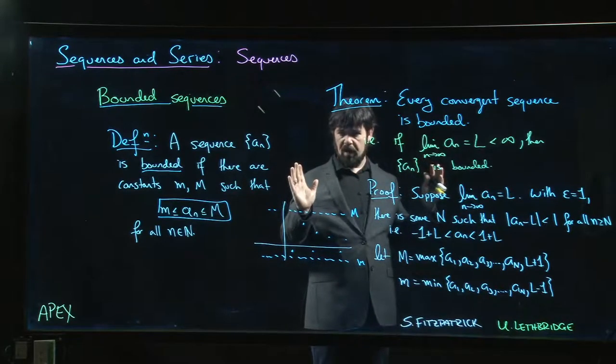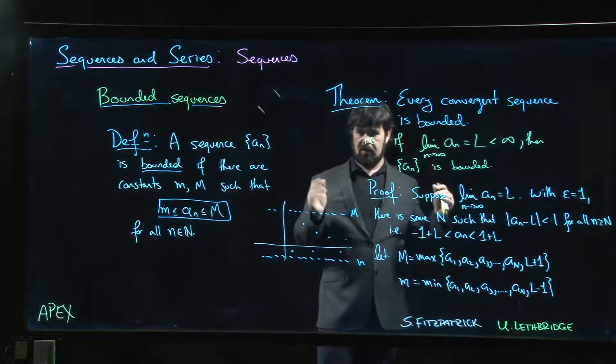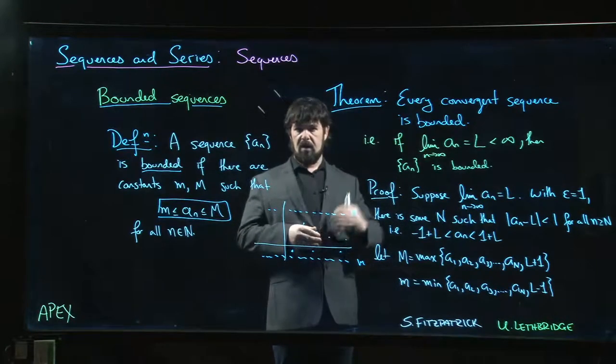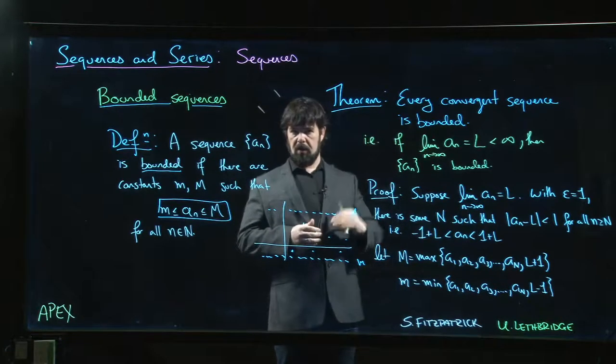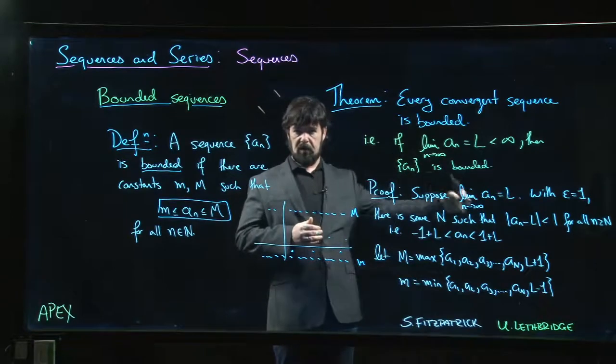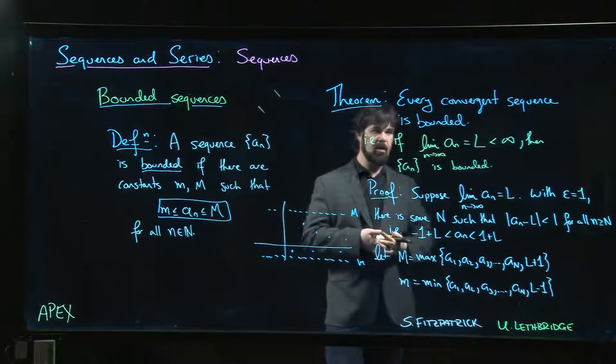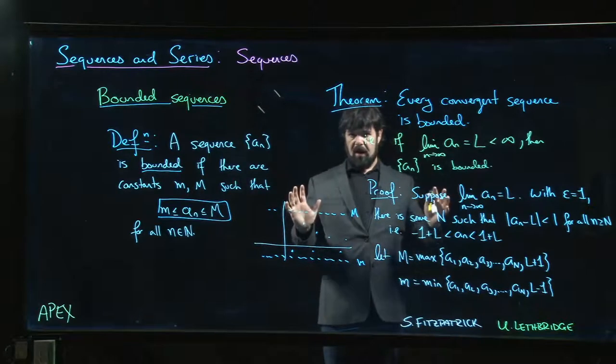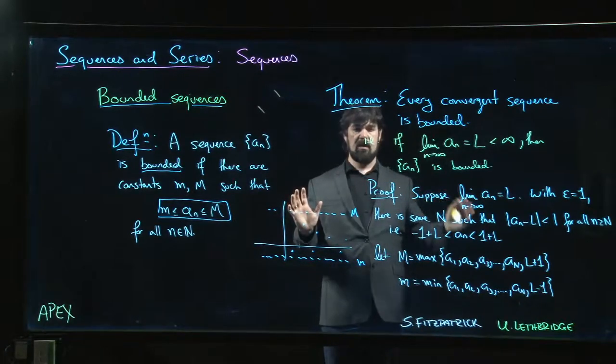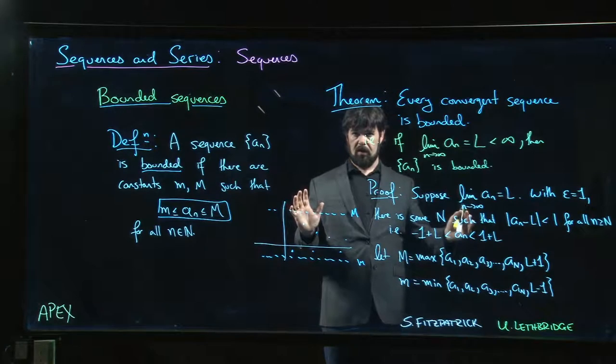A good example of that is the sequence (-1)^n. It's bounded - it's always between -1 and 1 - but it goes back and forth forever. It never settles down to a limit. So there are bounded sequences that don't converge. We can add one more condition that does guarantee convergence, and that's what we're going to talk about in the next video.